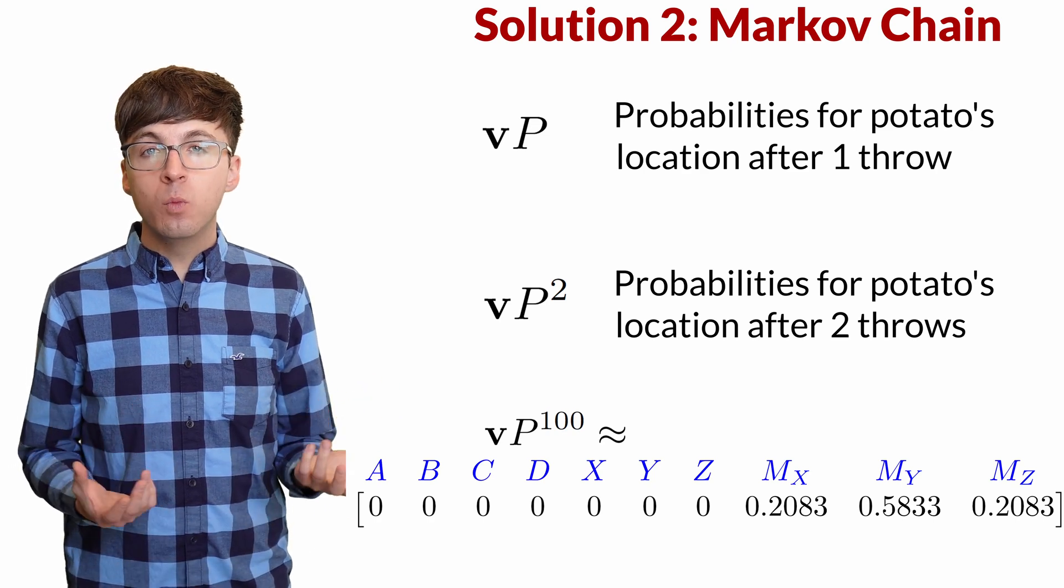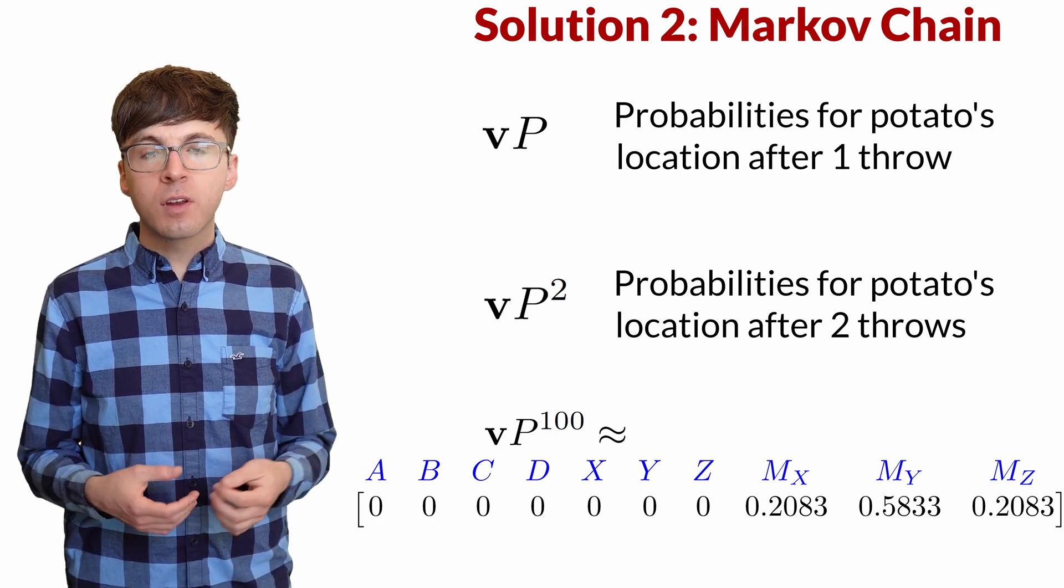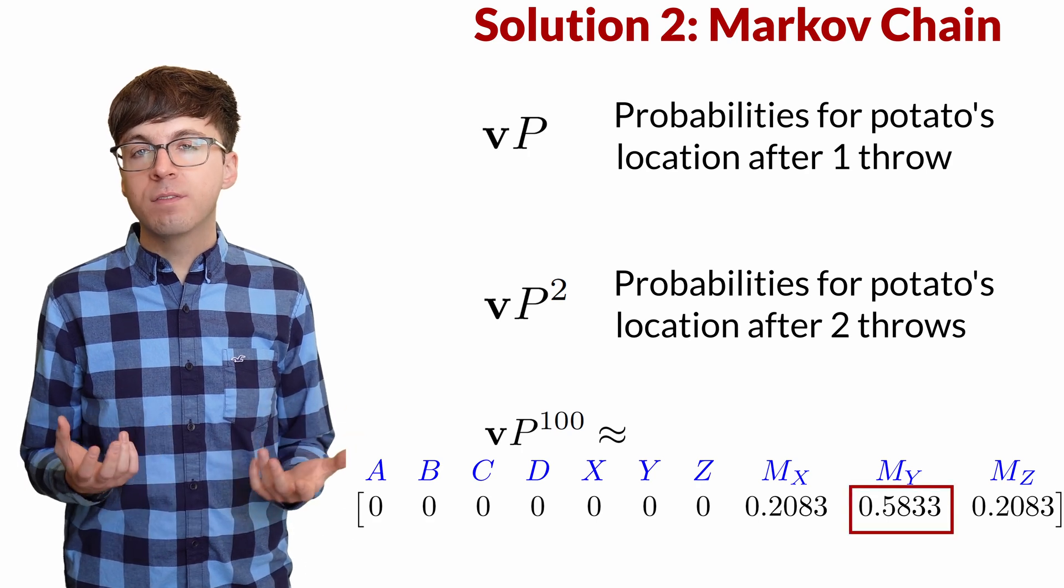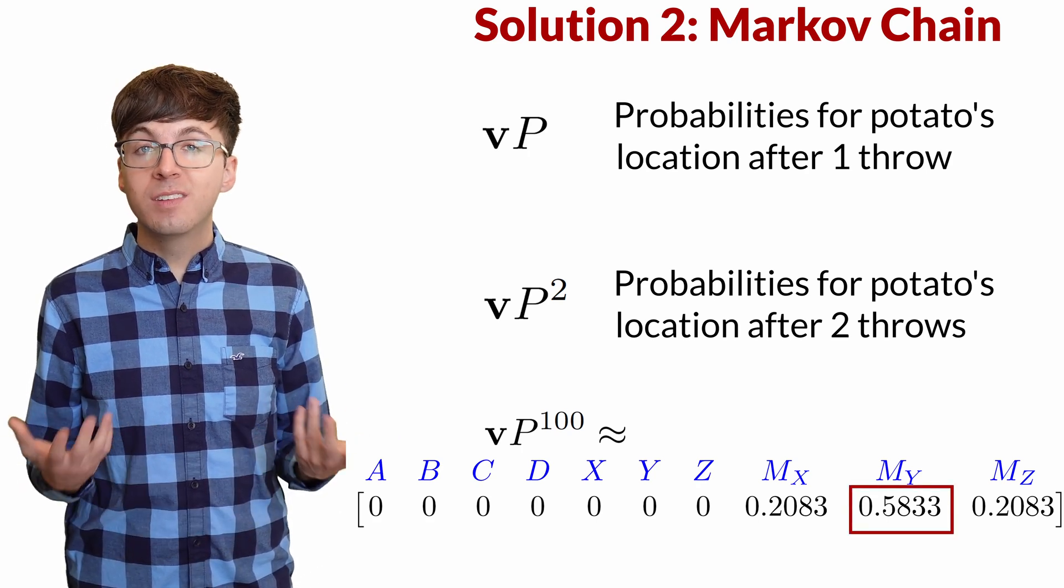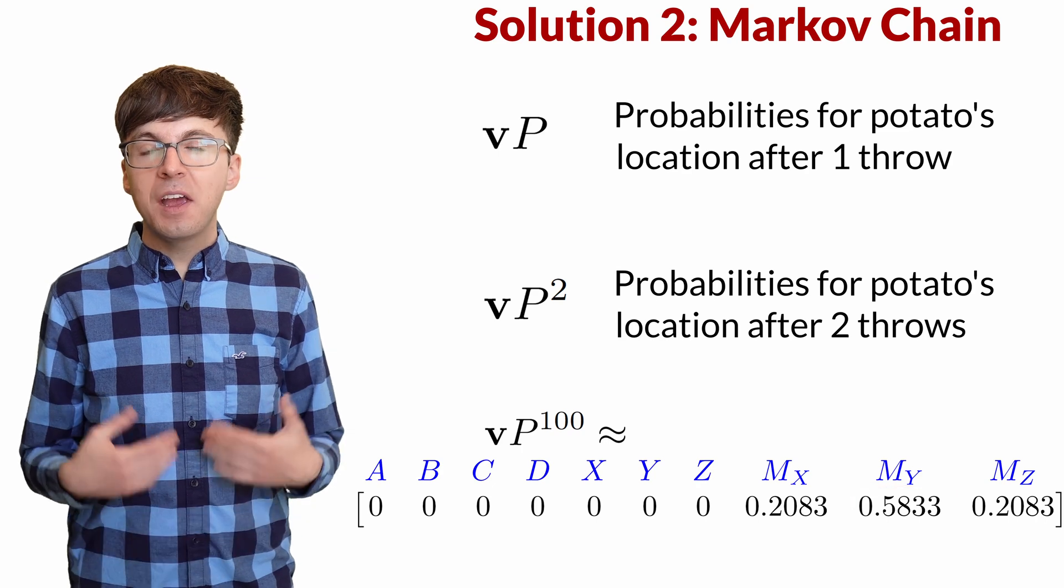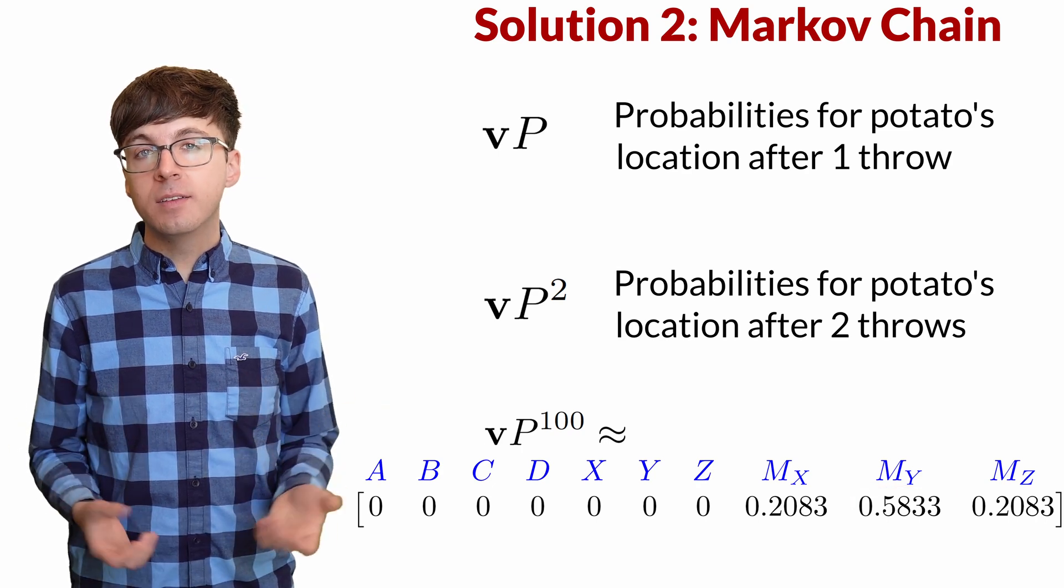We see the probability that we feed the monster within the first 100 throws is about .583 repeating, which is 7-12ths like we found before. And there's even a method to find the exact answers.